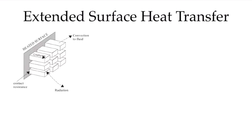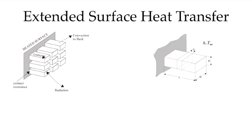In extended surface heat transfer, we are trying to remove — or add, in some cases — heat to a given surface. Here's my surface that I want to reject heat from, and I may add an entire array of fins. We'll look at fin arrays later, but for now let's focus on one of these fins and solve for the heat transfer rate through one of those fins.